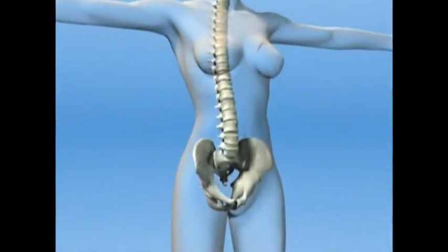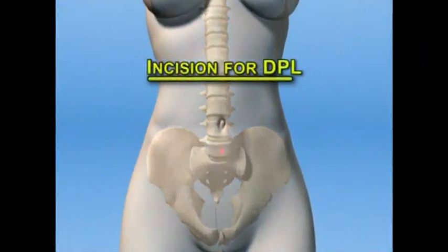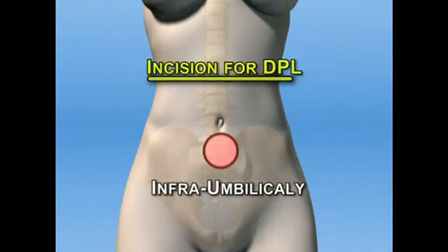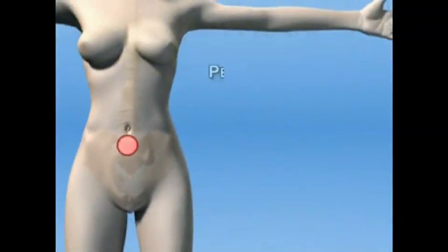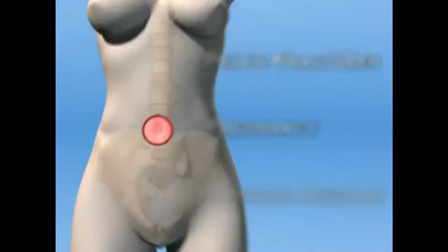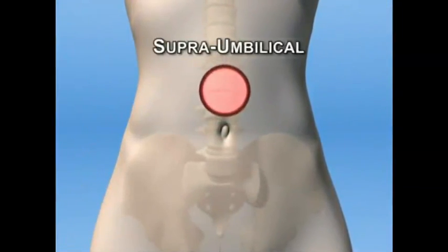The incision for a DPL is usually placed infra-umbilically. In the case of pelvic fractures, pregnancy, or previous lower midline incisions, a supra-umbilical incision may be used.